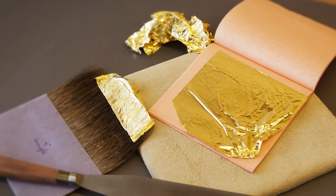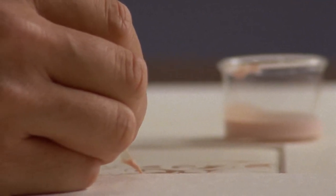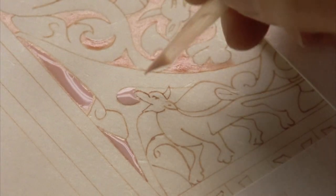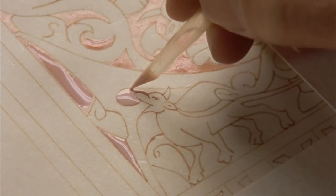Thin sheets of precious metals, like gold leaf, were always applied first. The illuminator put down a base coat, consisting of either a plaster-like substance called gesso, or a gum, as shown here.